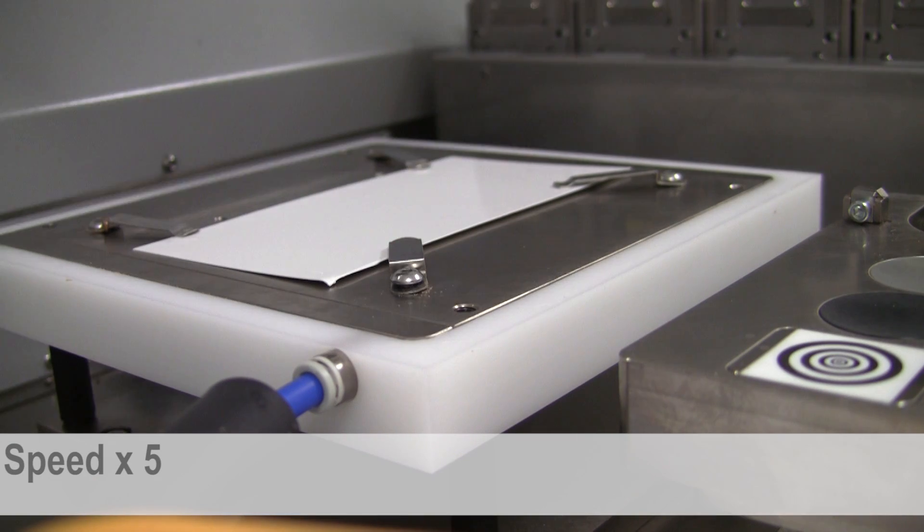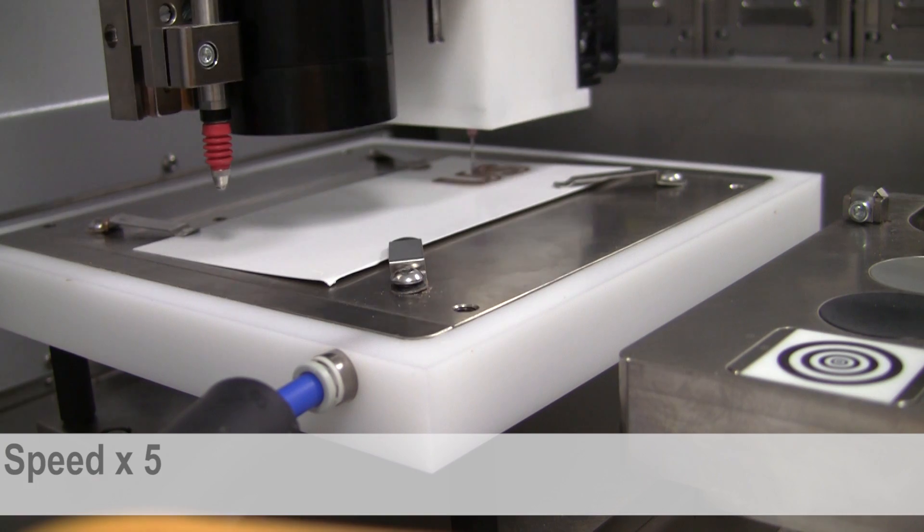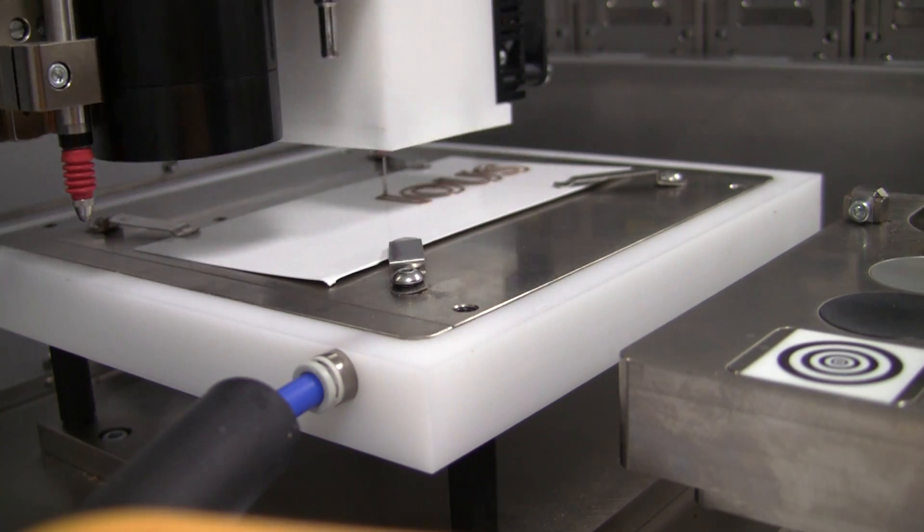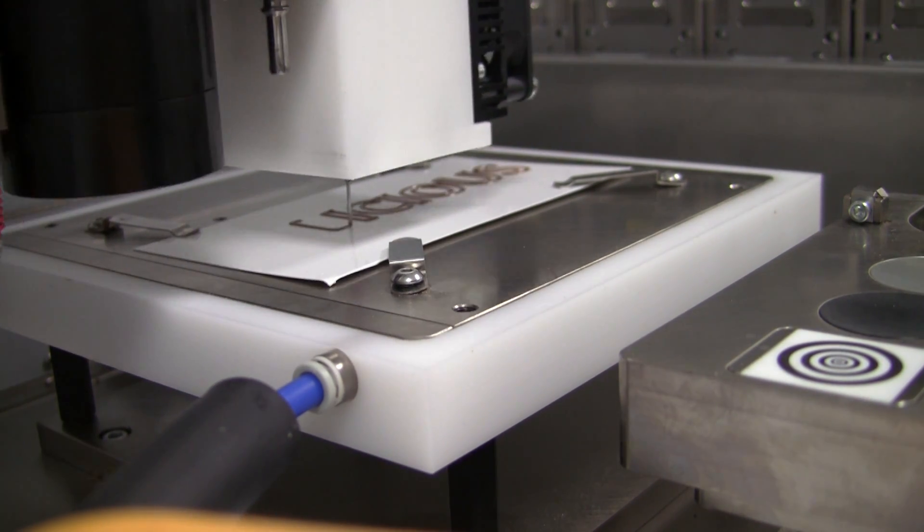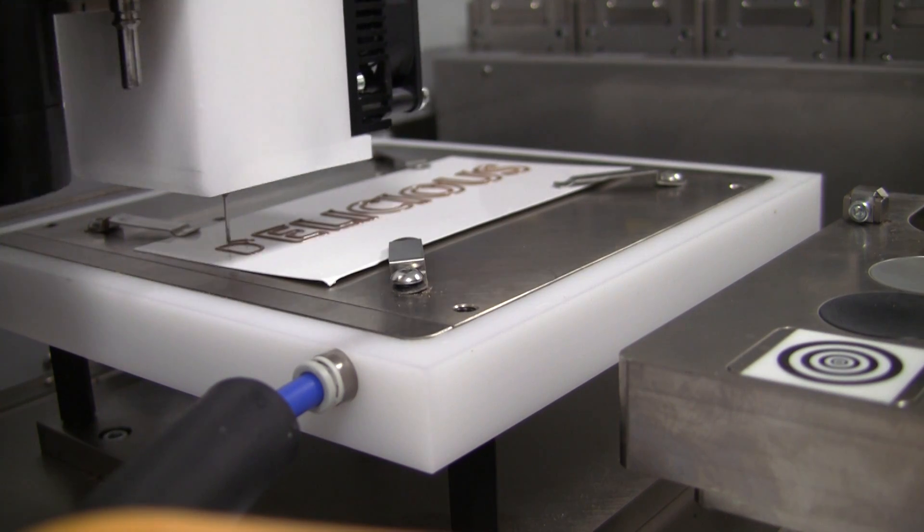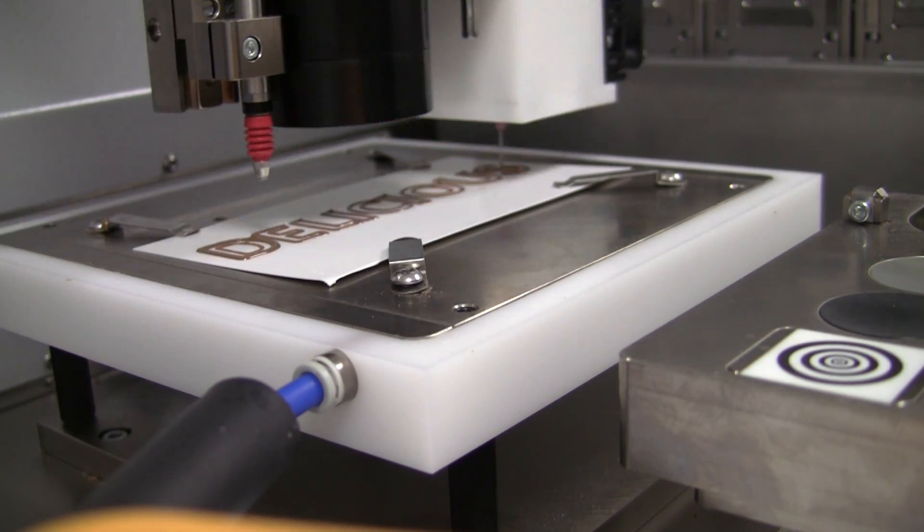Chocolate is melted and stuck in a syringe. As chocolate makes its way through with pressure, the head of the machine draws the chocolate layer. Within a few minutes, the chocolate structure will be completed and ready to eat.